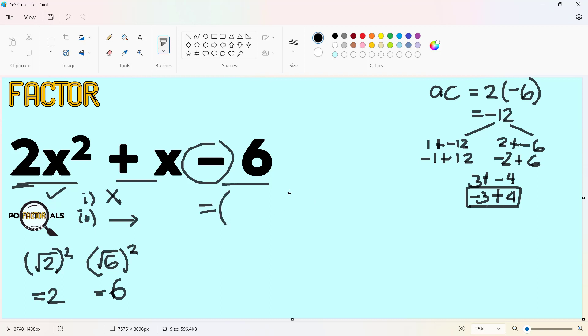If we have a quadratic trinomial, we are expected to have two binomial expressions. Now, if we are going to use x and x here, whatever will be the partner coefficients here, x times x will not result to 2x squared.